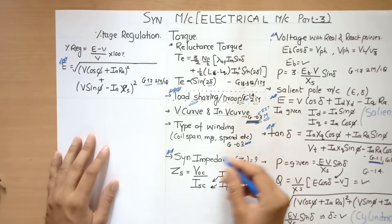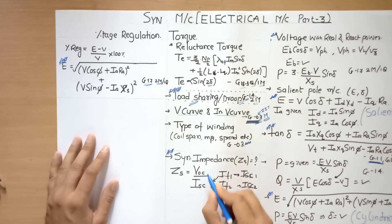That you can also see. Another thing, this was asked in several PSUs and gate also: what is the synchronous impedance of a motor? Synchronous impedance is nothing but voltage open circuit upon I short circuit. With two field currents, there will be two short circuits, and based on that you can find out Zs.